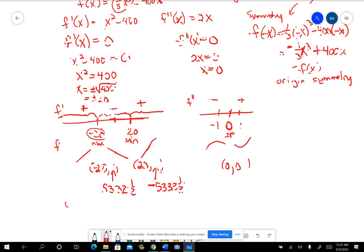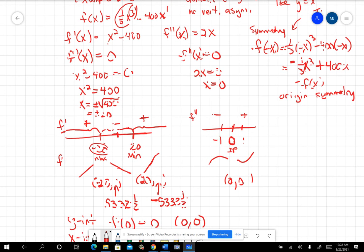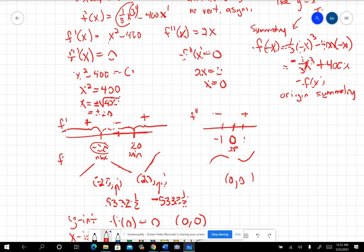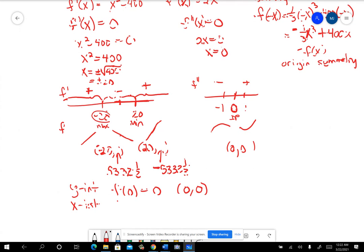So if we want the y-intercept, we just plug in a zero into the function. And we're going to get zero. So that means zero, zero is the y-intercept. When we do the x-intercept, it helps to consider the factored form, which would be x. Well, let me just write it here. It's one-third x to the third minus 400x. That's the function.